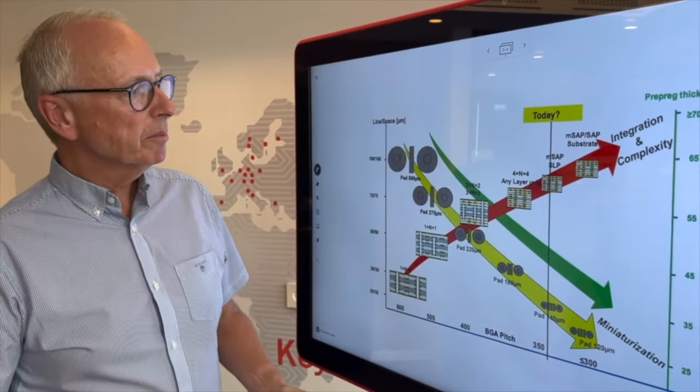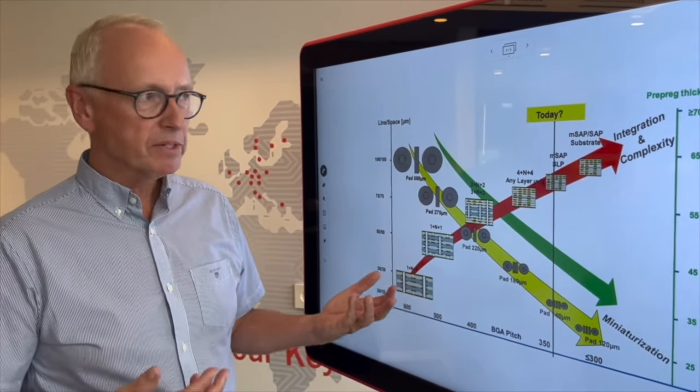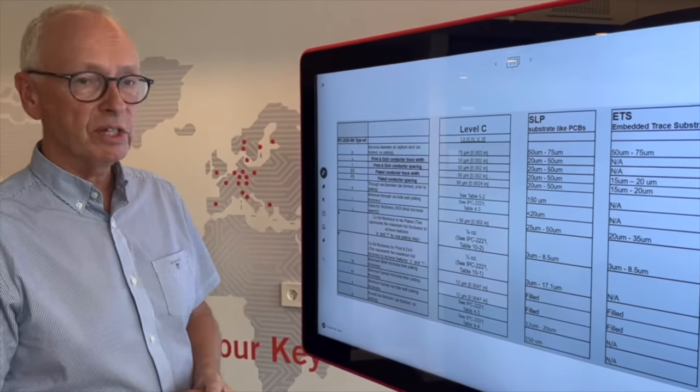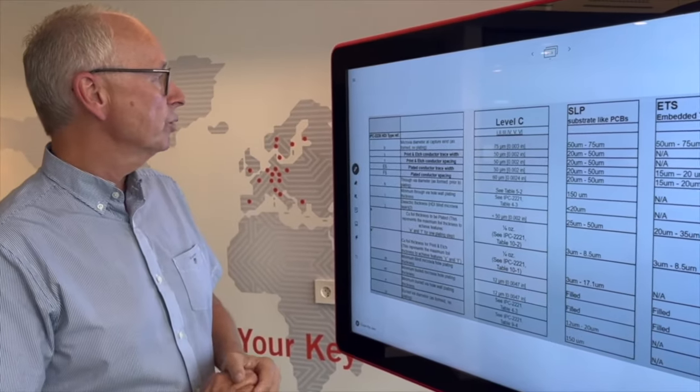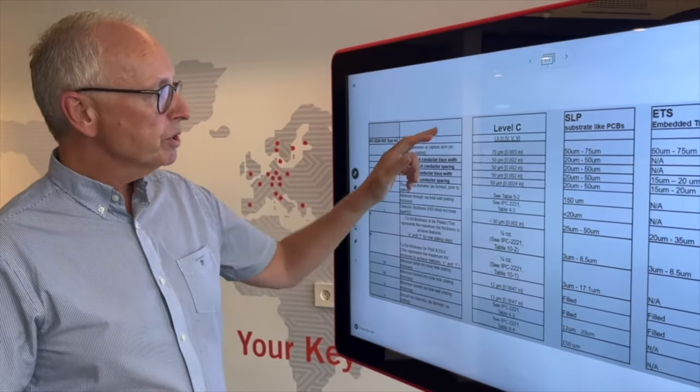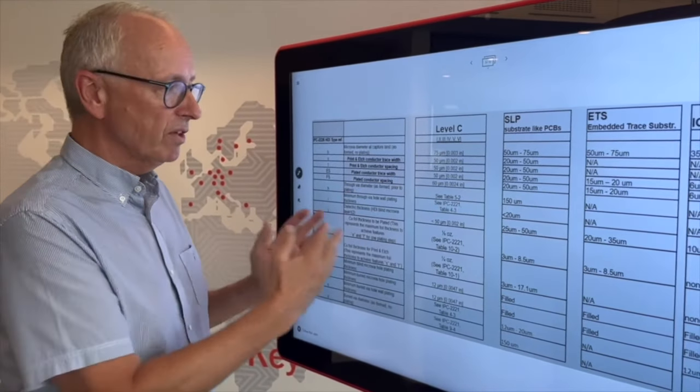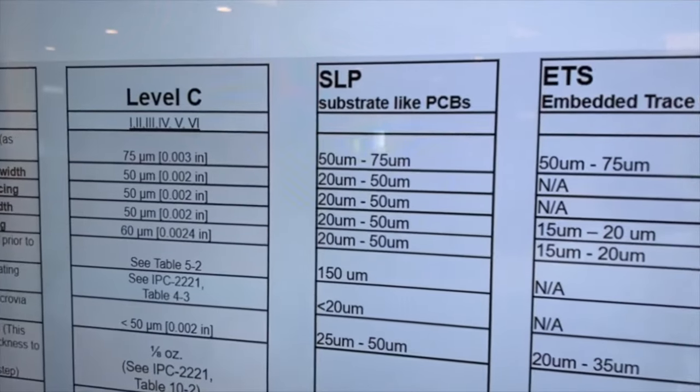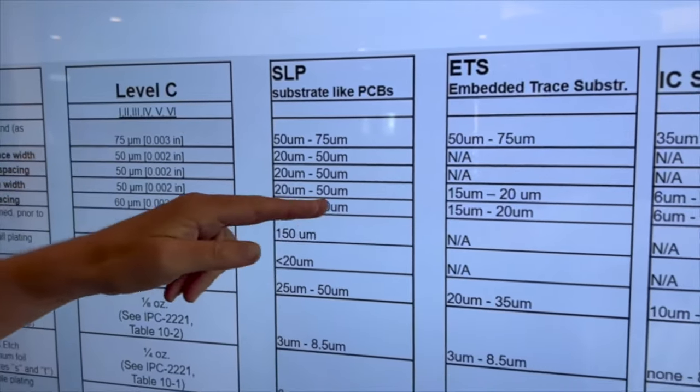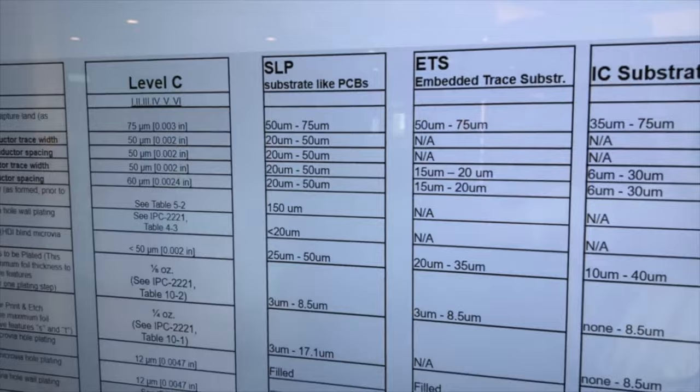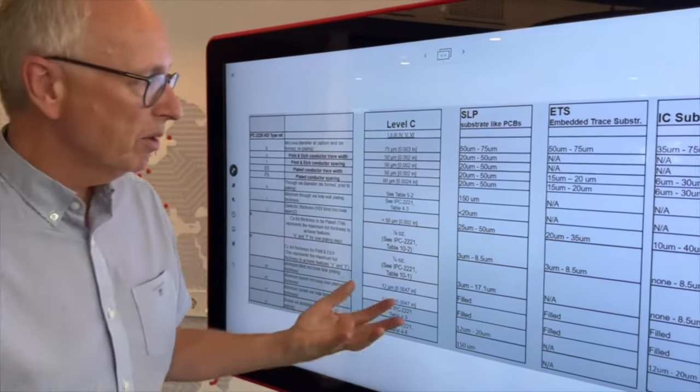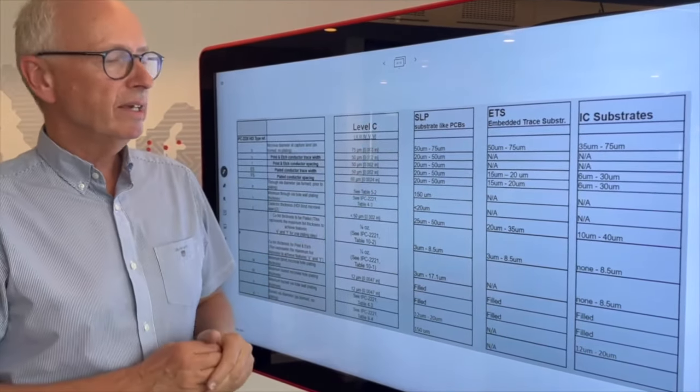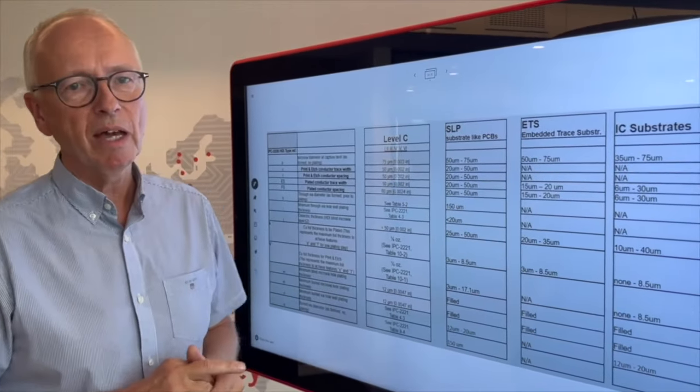To explain this further, let's look at how the IPC levels describe this. What we see here is what we call producibility level C in the standard called IPC 2226 HDI. Producibility level C is the most complex or the most advanced level we have today, going down to 50 micron tracking gap. Now we are looking at going further down from 50 to 20 micron tracking gap. If you want to go further down, we go from substrate-like PCBs into new technologies even exceeding what we call semi-additive processing.